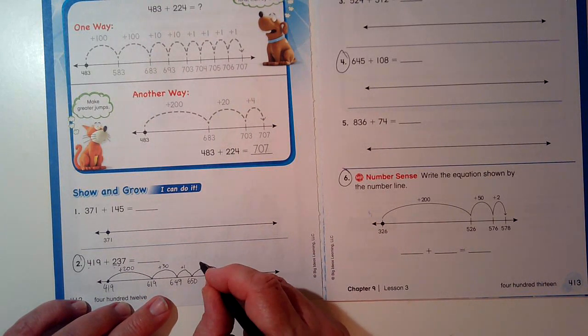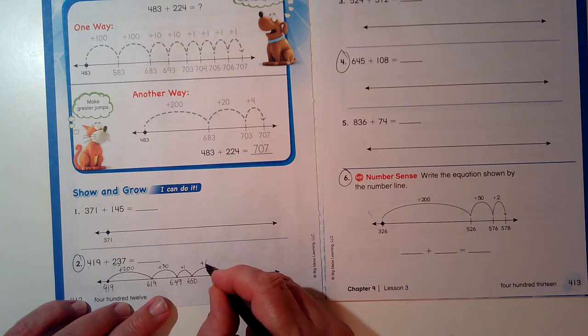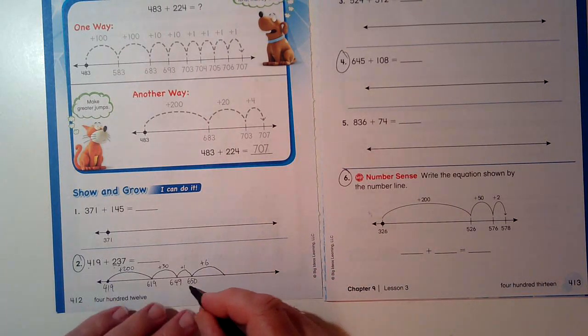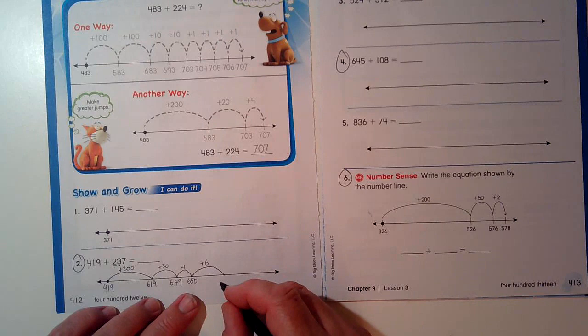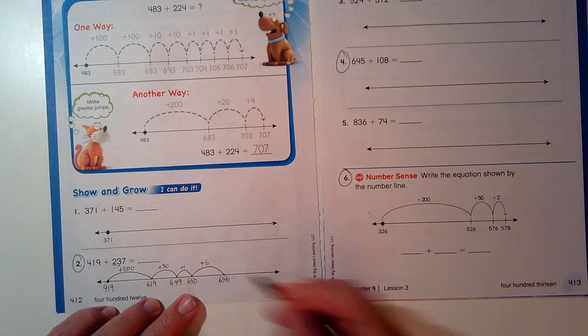There's no rule that says I have to do them one at a time. So I say plus six more. 650 plus six more, 656.